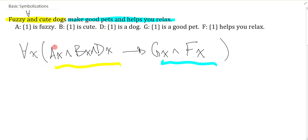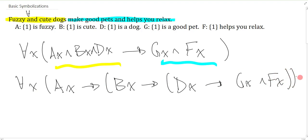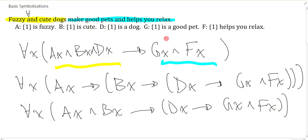Obviously these can be in any order, but you can also do it in a variant form. You can actually say if you're fuzzy then if you're cute then if you're a dog then you have the property GX and FX. You just have to make sure you close all the brackets. These are perfectly equivalent. You could have said if you're fuzzy and cute then if you're a dog then you have the final property.